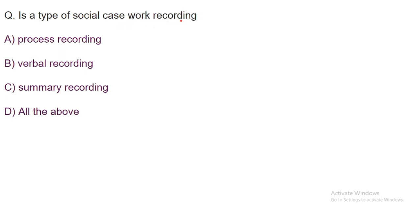Next question: What are the types of social casework recording — process recording, verbal recording, summary recording, or all of the above? The correct answer is all of the above. Process recording details the process; verbal recording captures the verbal interaction between client and caseworker; and summary recording highlights the main facts at different stages of the client's case. So casework recording types include all of the above.